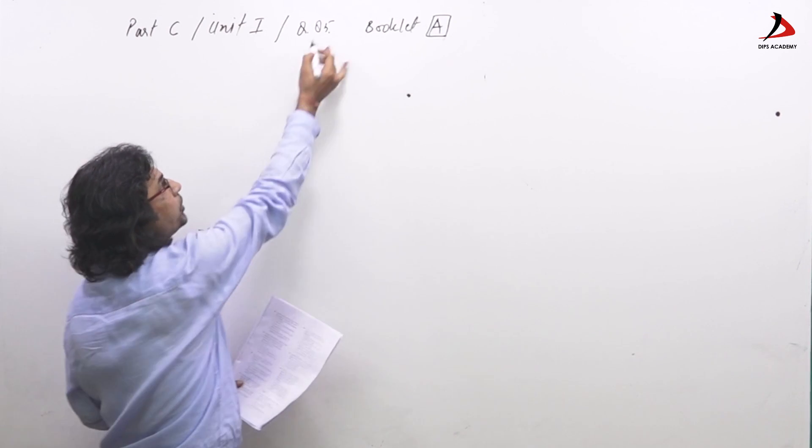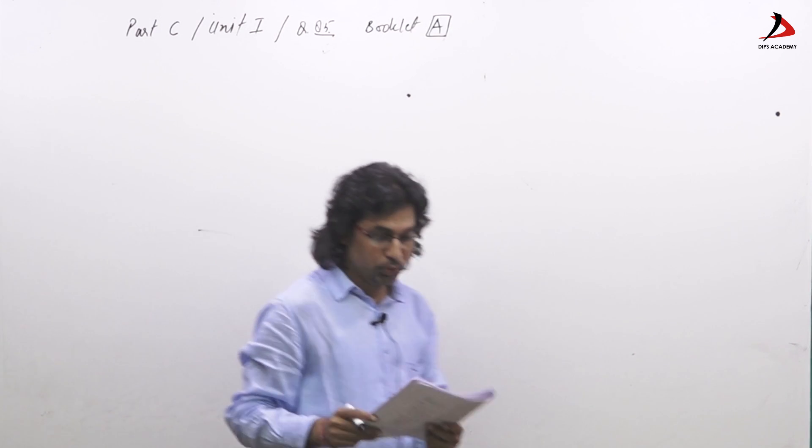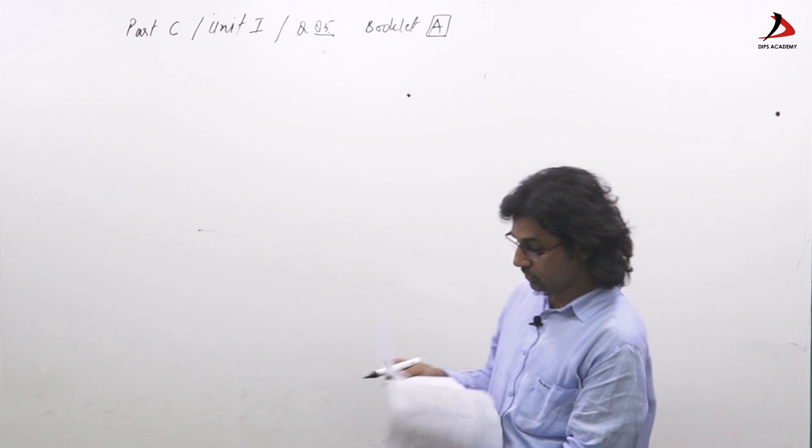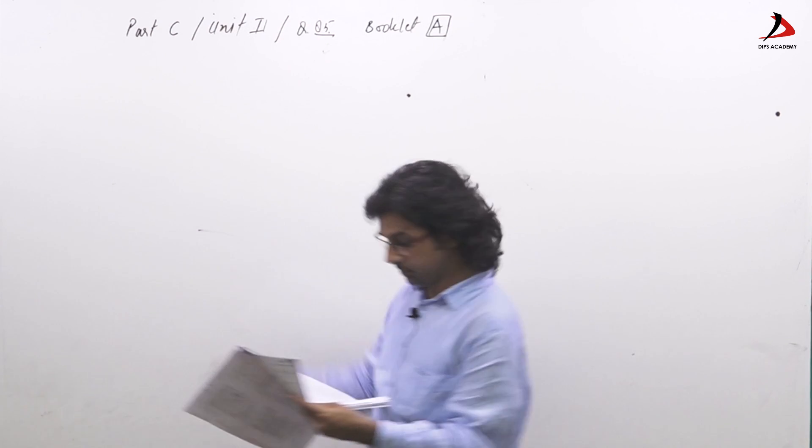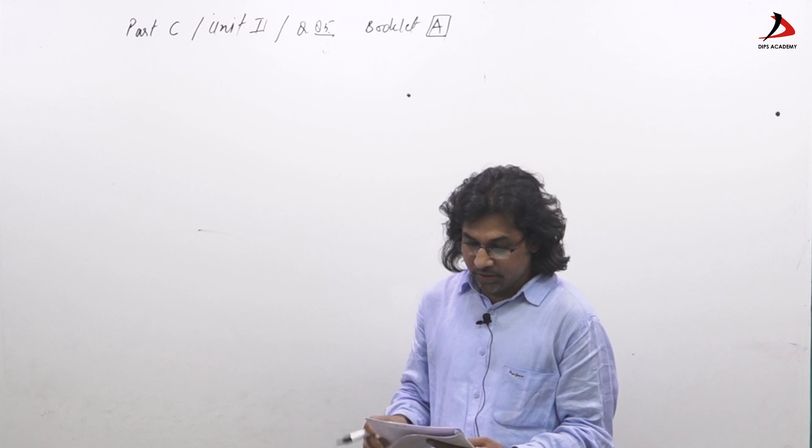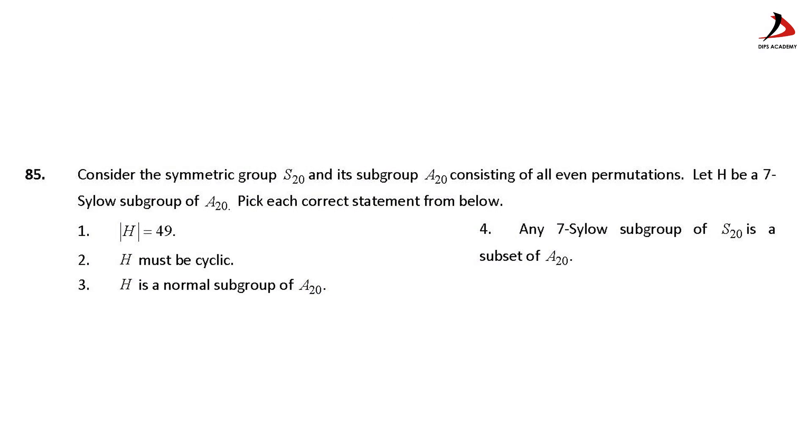There is now question 85, booklet A, part C, unit 2. Now see, the question reads out - consider the symmetric group, you can see in the inset given below - consider the symmetry group S_20 and its subgroups A_20 consisting of all even permutations. Let H be a 7-Sylow subgroup of A_20.